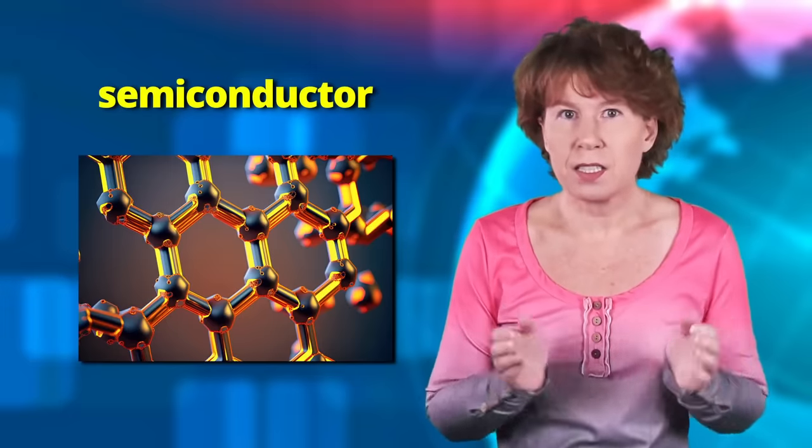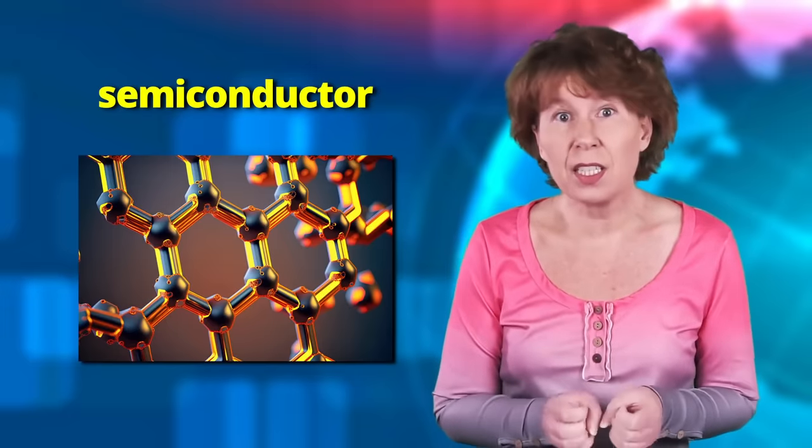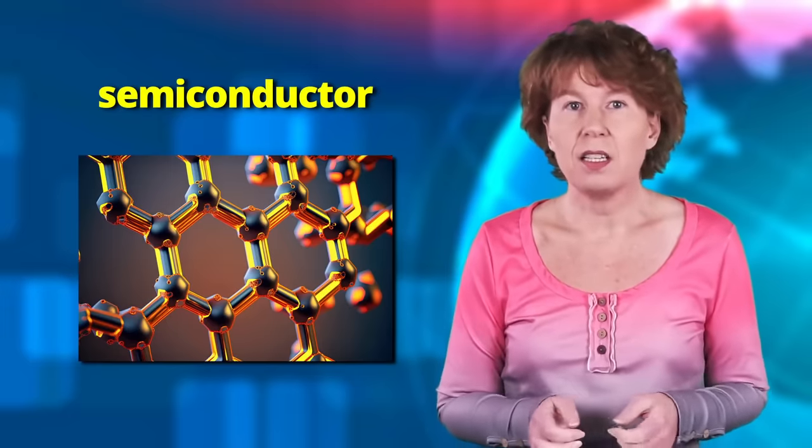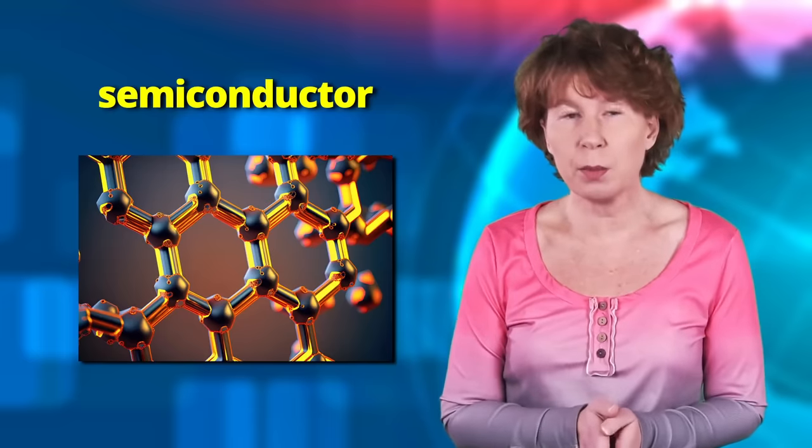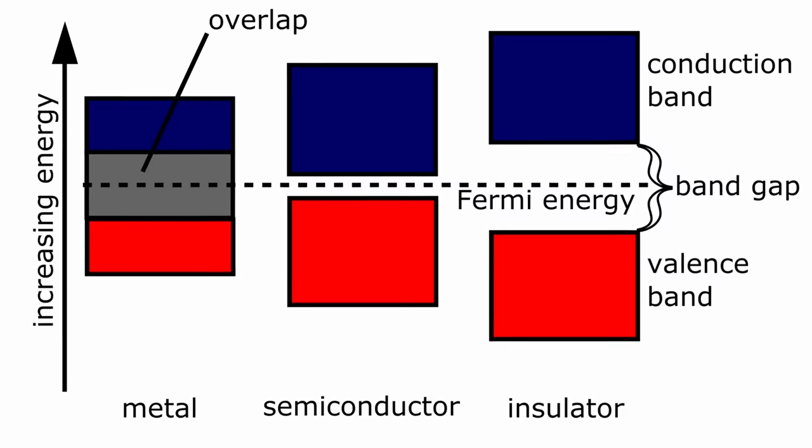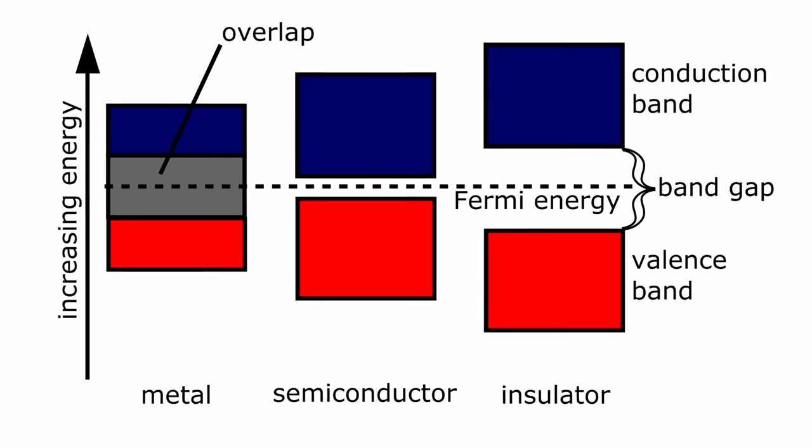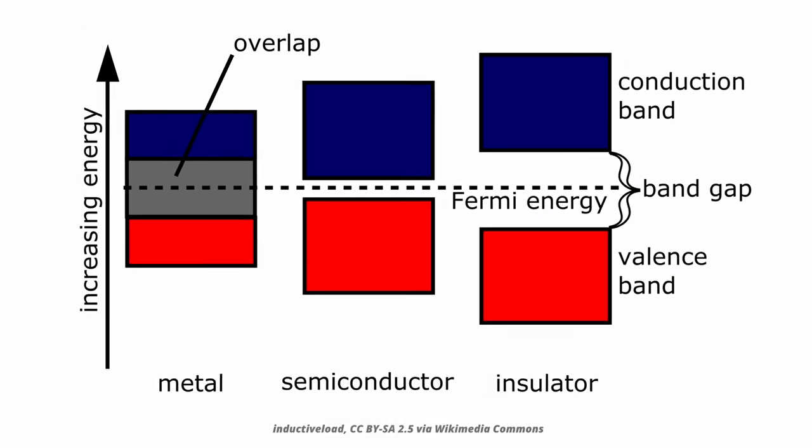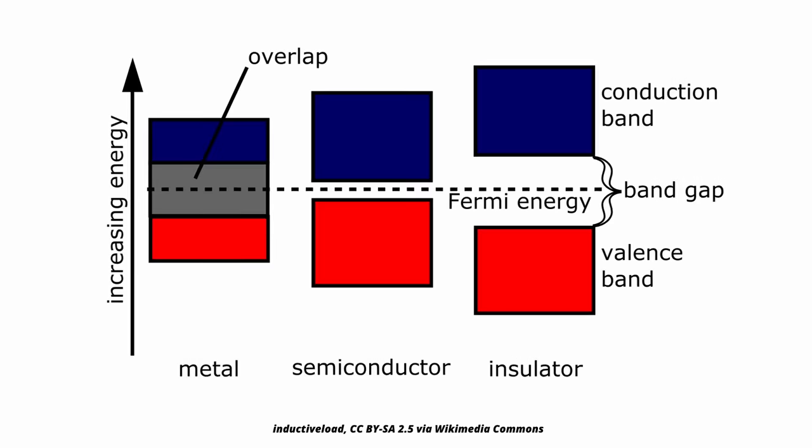But while graphene is good at giving up heat and is very good at conducting electricity, it's unfortunately not a semiconductor. You see, a semiconductor is the material to which you can apply a current to make it switch from a non-conducting to a conducting state.